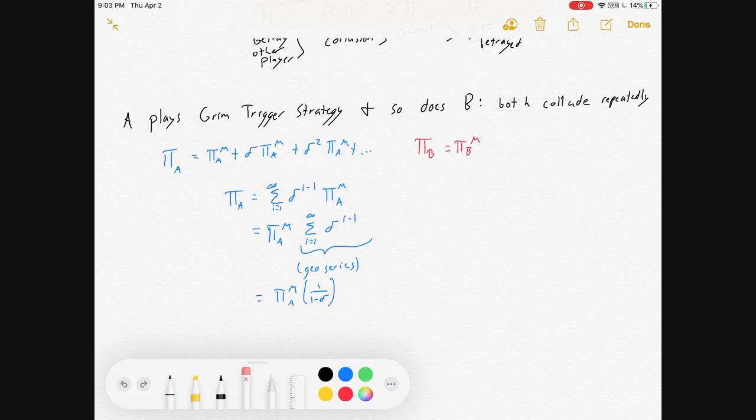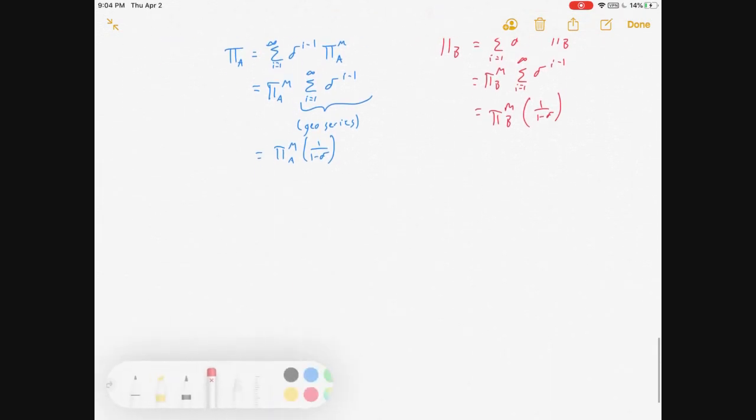Likewise, for firm 2, all the same logic applies. We'll follow it all the way through. And you get collusive profits for B times 1 over 1 minus delta. Now, let's get some other situations.